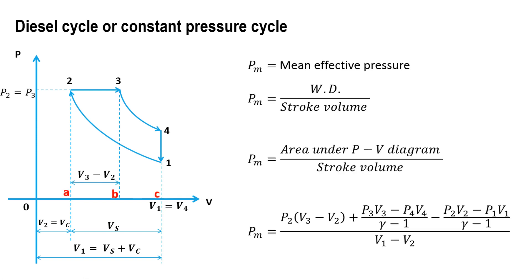Now we derive the expression for mean effective pressure. Work done equals pressure into volume, so mean effective pressure equals work done divided by stroke volume. The work done is the area under the PV diagram — the area enclosed by processes 1→2, 2→3, 3→4, and 4→1. This area is divided into parts: first, the rectangle area A-2-3-B, which equals P2 multiplied by (V3 minus V2).